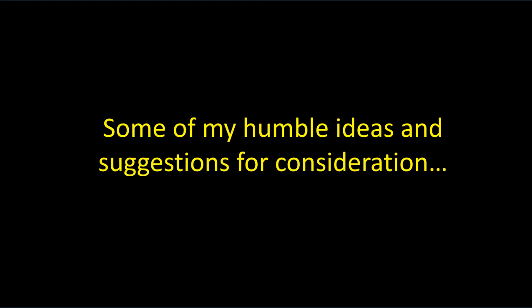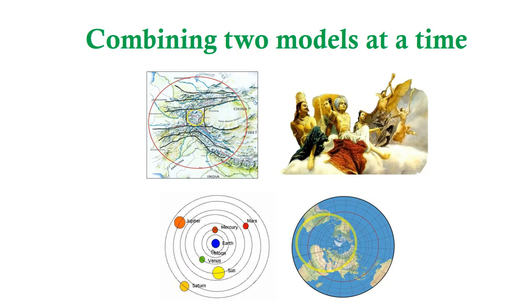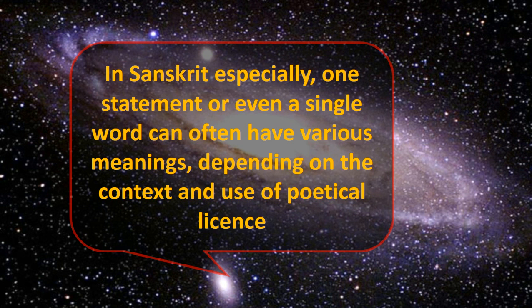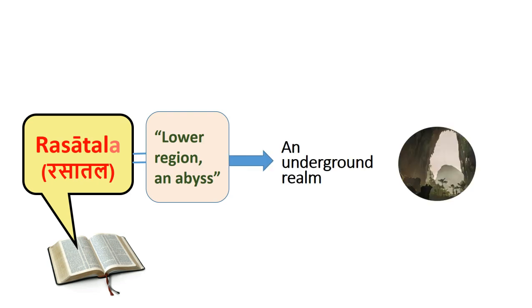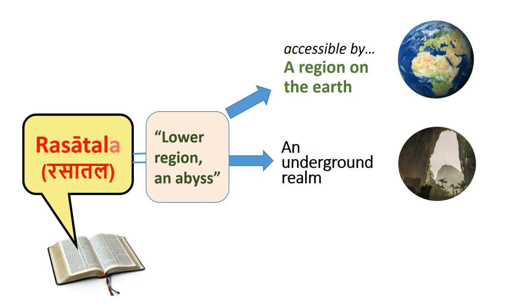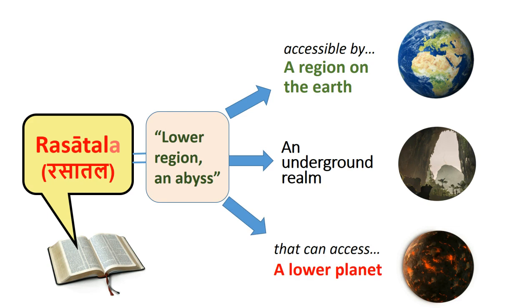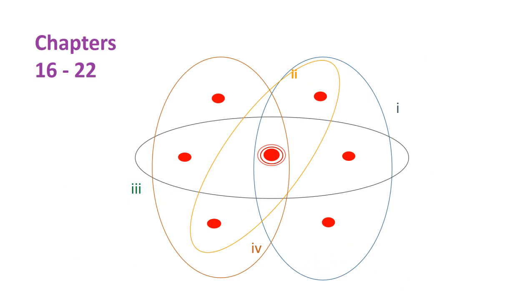Now some humble ideas and suggestions for consideration: let's try combining two models at a time. In Sanskrit especially, one statement or even a single word can often have various meanings depending on context and poetical license. For example, Rasatala means in English a lower region or an abyss — easily translated as an underground realm. However, in Sanskrit it can also mean what accesses that realm, a region on the earth connected to the underground realm, or in astronomy, a lower planet. Going back to the chapters with the red dots and their respective models — now let's grasp two models at a time.